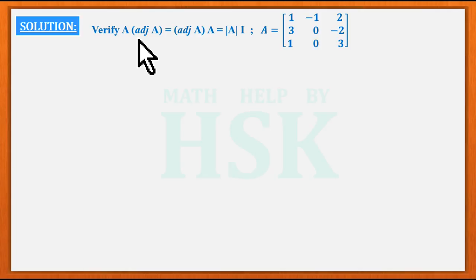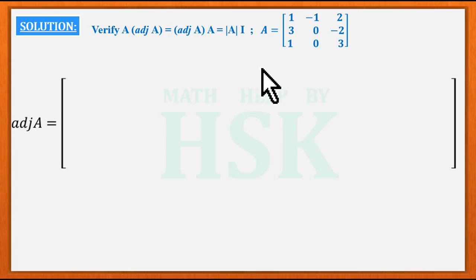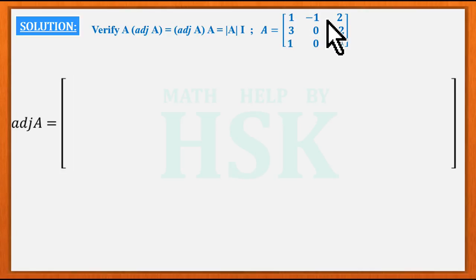For this matrix A we are going to calculate its adjoint. It is known that the adjoint of a given matrix is calculated by computing the cofactors of each element. If they are calculated according to the rows, then we write the cofactor column-wise to form the adjoint of matrix A.